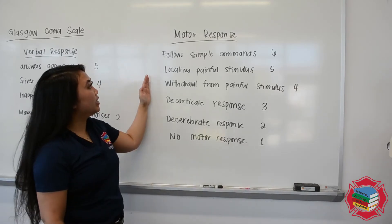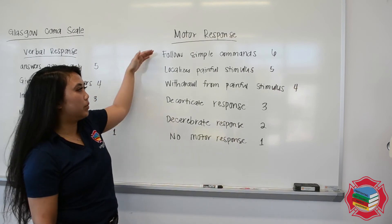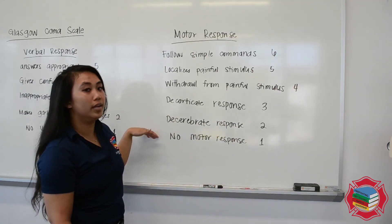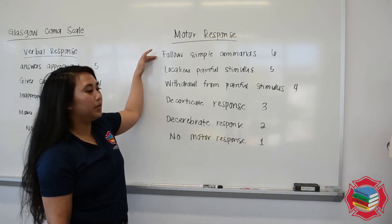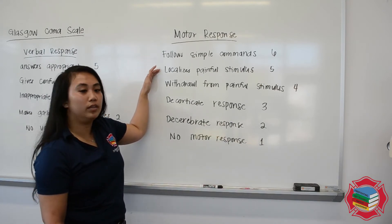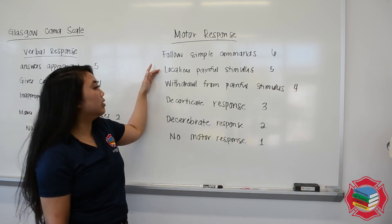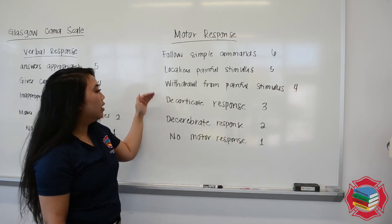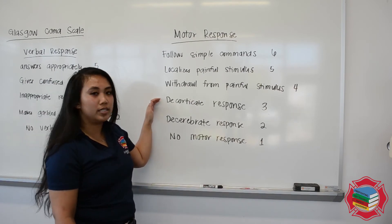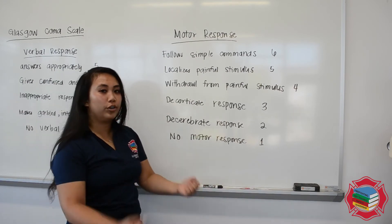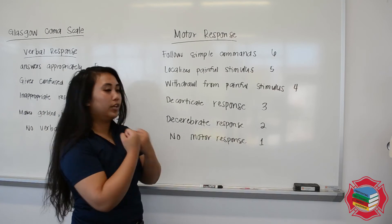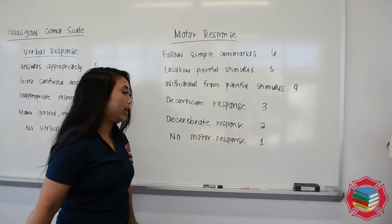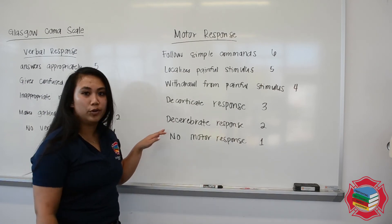Lastly, it's going to be the motor response. This one is going to start out at 6 and go down to 1. For 6, it's going to be follow simple commands. Number 5 is going to be localizes painful stimulus. Number 4 is going to be withdraw from painful stimulus. Decorticate response is 3 — the arms are going to go towards the core. Decerebrate response is going to be 2, so it's going to be away. And then 1 is going to be no motor response.